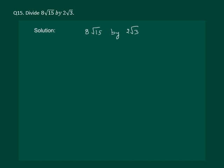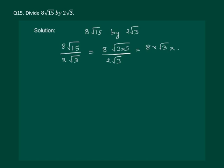Let us read the question: divide 8 root 15 by 2 root 3. We start by factorizing root 15 as root 3 into root 5, and then we get 8 into root 3 into root 5 whole divided by 2 into root 3. The root 3 cancels, giving us 4 root 5 as the required answer.